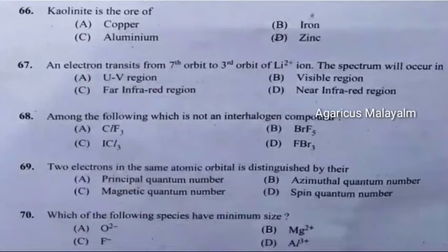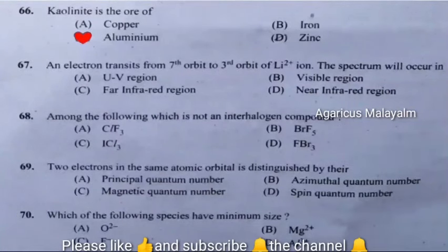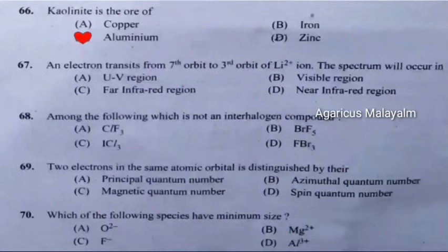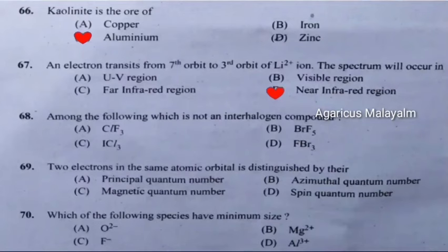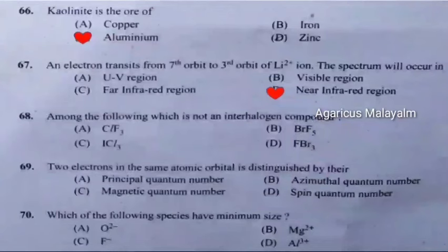Question 66: Corunite is the ore of. Correct answer is Option C: Aluminium. Question 67: An electron transits from the 7th orbit to the 3rd orbit of lithium ion. The spectrum will occur in. Correct answer is Option D: Near infrared region. Question 68: Among the following, which is not an interhalogen compound? Correct answer is Option D: FBr3.